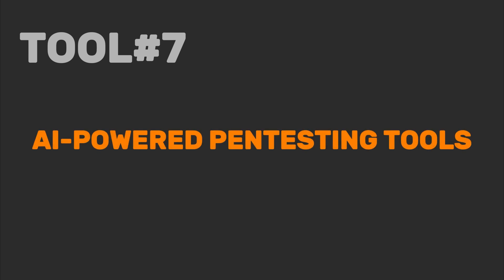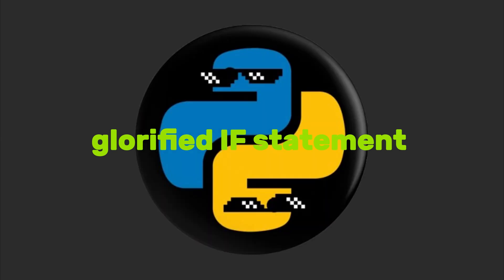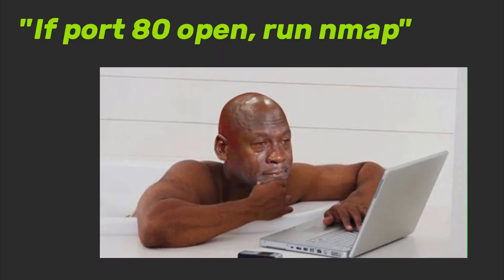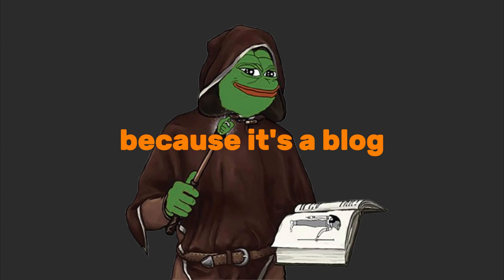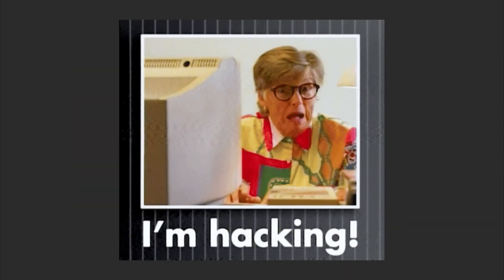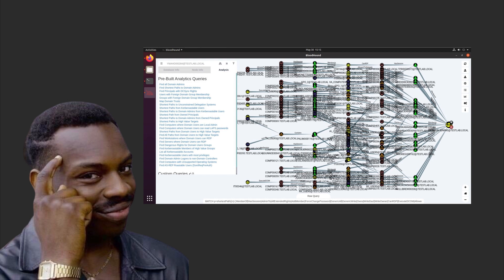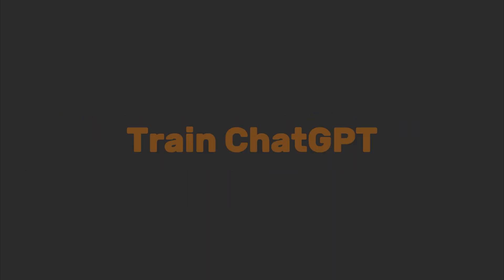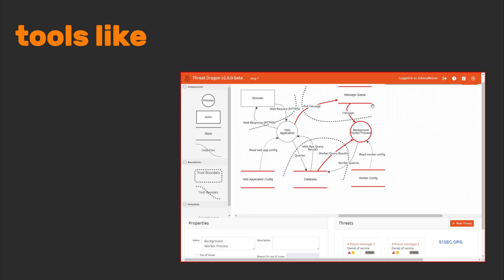Tool number seven: AI-powered pen testing tools — about as intelligent as a potato. These apps claim to autonomously hack like Skynet, but their AI is just a glorified if-statement wrapped in a Python script: if port 80 open, run NMAP; else, cry. They miss context — flagging a WordPress blog as critical just because it's a blog. Zero adaptability: a real attacker changes tactics, but these tools just rerun the same scan and hope. Be smarter than the AI. Use Bloodhound for Active Directory attacks — it maps attack paths like a GPS for hackers. Train ChatGPT ethically to write custom scripts. Learn threat modeling with tools like Microsoft Threat Modeling Tool to think like an attacker.